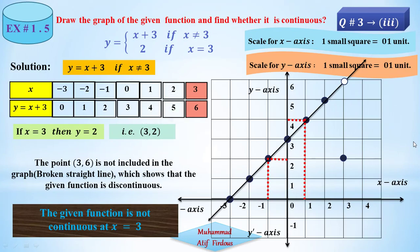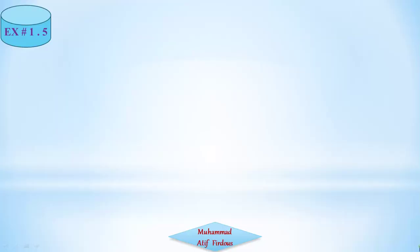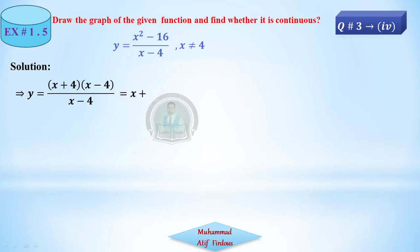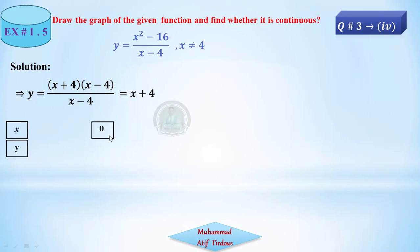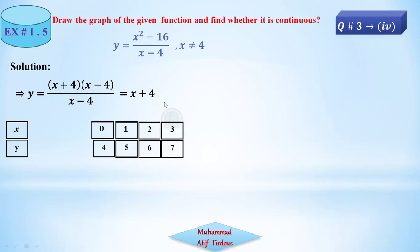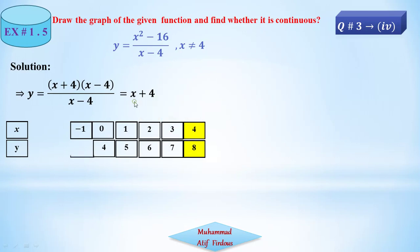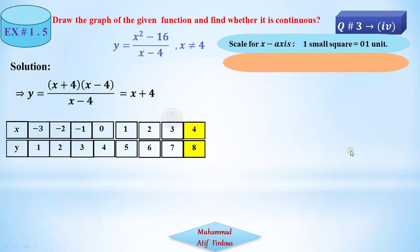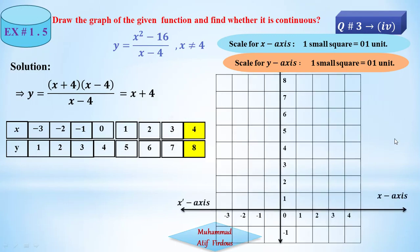The last part is part 4, similar to part 2. The function is (x squared minus 16) over (x minus 4), with x not equal to 4. First simplify: factor x squared minus 16 as (x minus 4)(x plus 4). Cancel x minus 4, leaving y equals x plus 4. Now build the table: x equals 0 gives y equals 4; x equals 2 gives y equals 6; x equals 3 gives y equals 7; at x equals 4 we place an open interval.